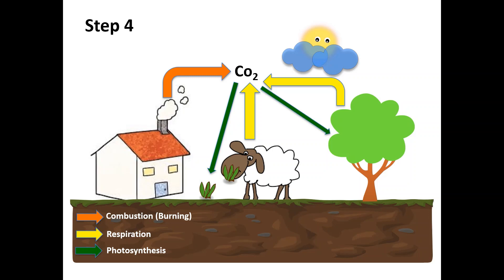Carbon moves from plants and animals to soils. When plants and animals die, the dead organisms are eaten by decomposers and the carbon in their body is then returned to the atmosphere as carbon dioxide.